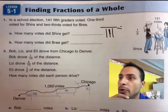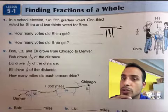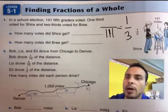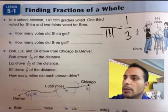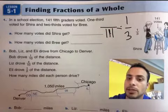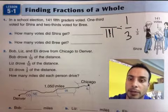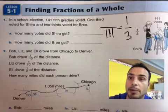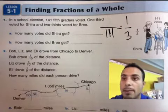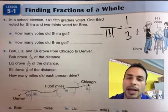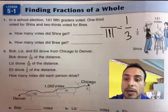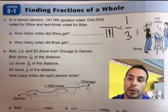One-third of the vote went to Shearer, and two-thirds to Bree. So what would be one-third of this? What number do I have to multiply the 3 into to get 141? I can simply divide: 141 divided by 3. That gives me the number to multiply the 1 into to get one-third. Then if I want two-thirds, I take that number and multiply it by 2, giving me 2 of 3 parts.